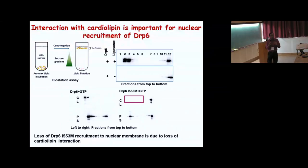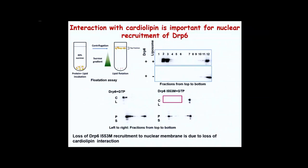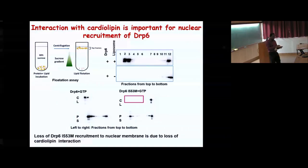The loss is not due to overall loss of membrane binding — the mutant can still bind membranes with phosphatidylserine. It is very specifically the cardiolipin–DRP6 interaction that is lost due to the single I553 mutation. Cardiolipin is a lipid with a three-glycerol backbone and four acyl chains instead of the usual two, so the head group is smaller and the structure gives negative curvature — it is present mainly in mitochondria to give cristae formation.